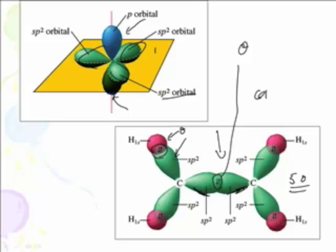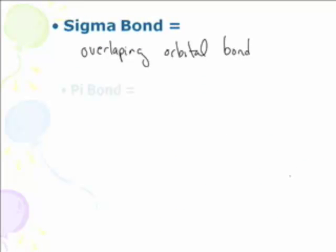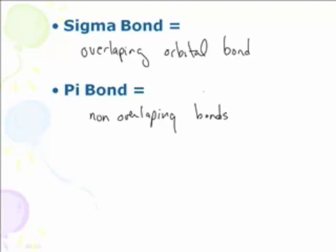That's a very good AP question. How many sigma bonds and how many pi bonds are in the following compound? So let's take a look at a pi bond. Pi bonds are non-overlapping bonds. This is the weird one.